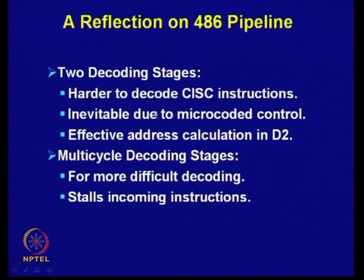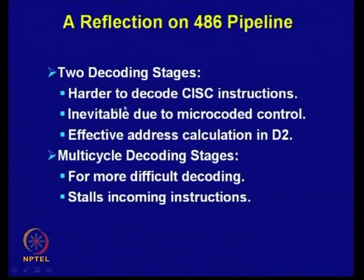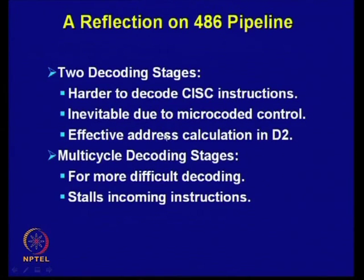You may be wondering why two decoding stages were provided in 80486 — because it uses a complex instruction set computer. Decoding of instructions is much more complex compared to decoding of RISC instructions, so it was necessary to have two decoding stages. It is harder to decode CISC instructions, and it is inevitable due to the microcoded control used in these processors. Effective address calculation is done in decoding stage 2.